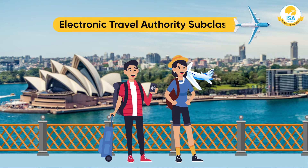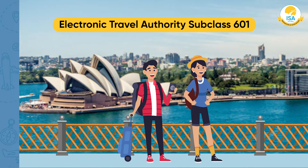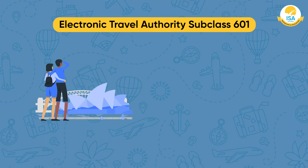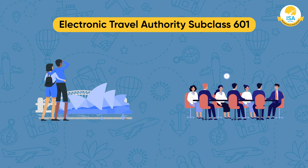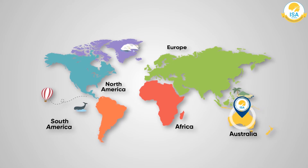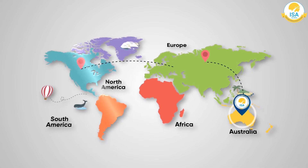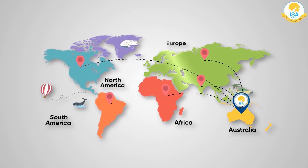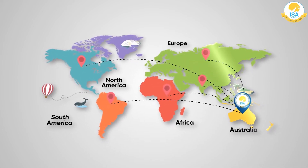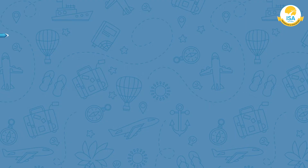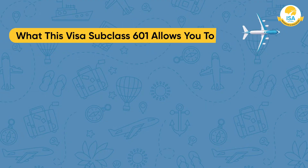The Electronic Travel Authority Subclass 601 visa authorizes the applicant to visit Australia as many times as he or she wants in a period of one year. Each time they travel, the applicant can stay for a maximum of three months. ISA Migrations is a fastest growing migration agency that has helped travelers from all over the world in getting a travel visa to Australia.